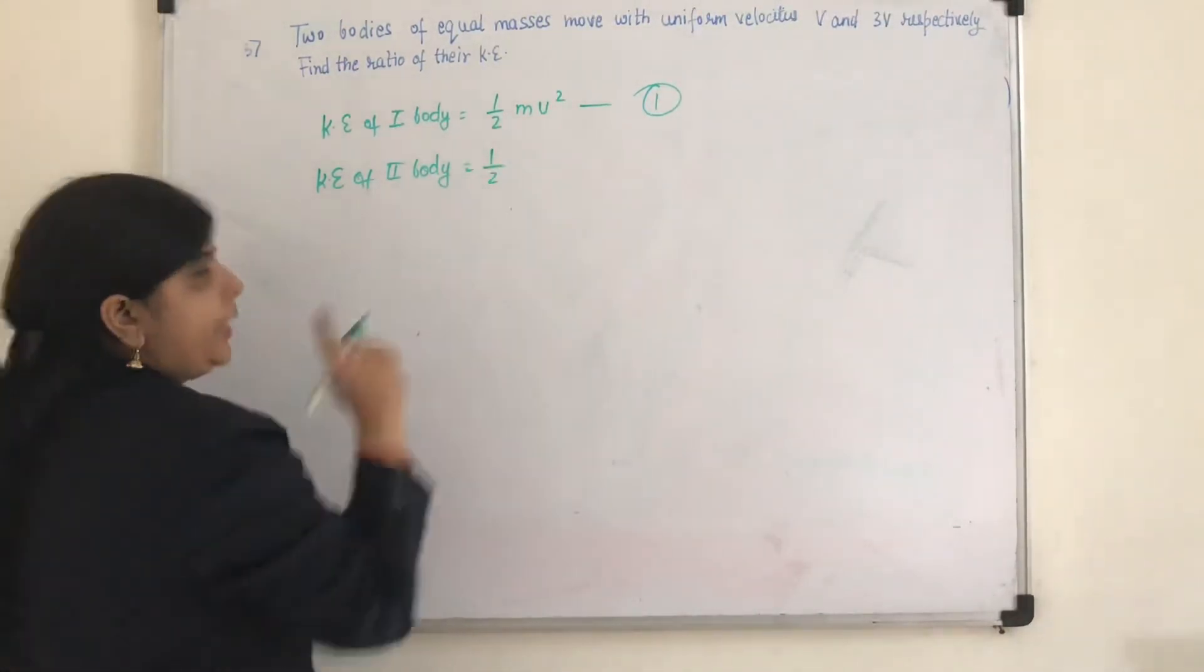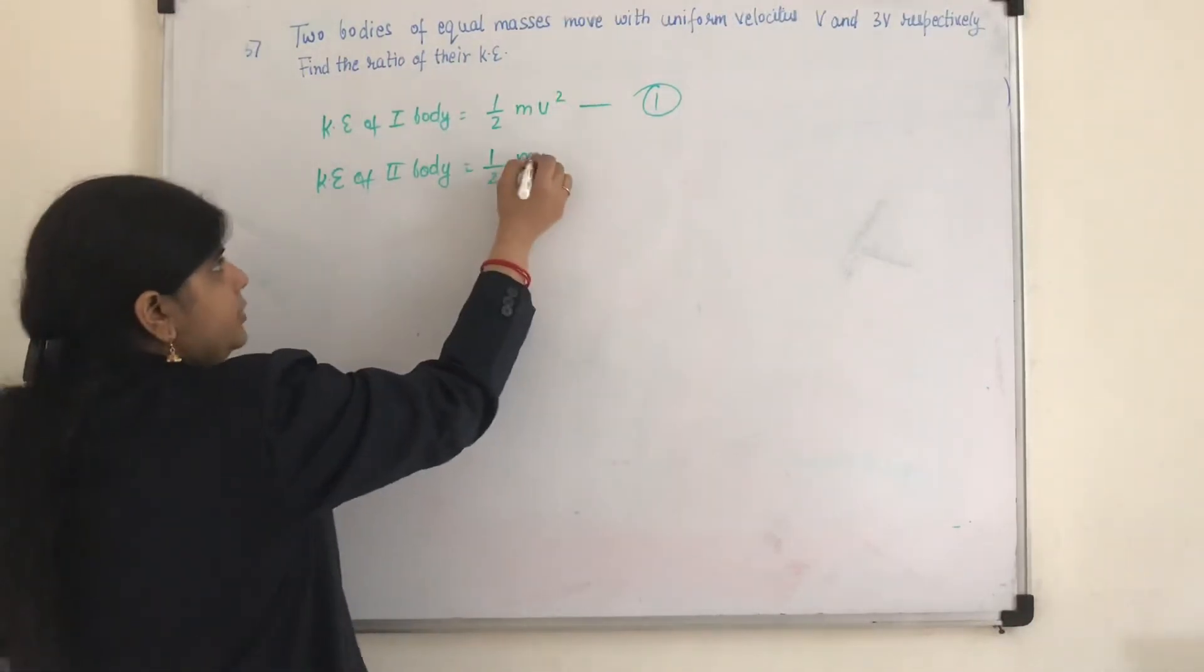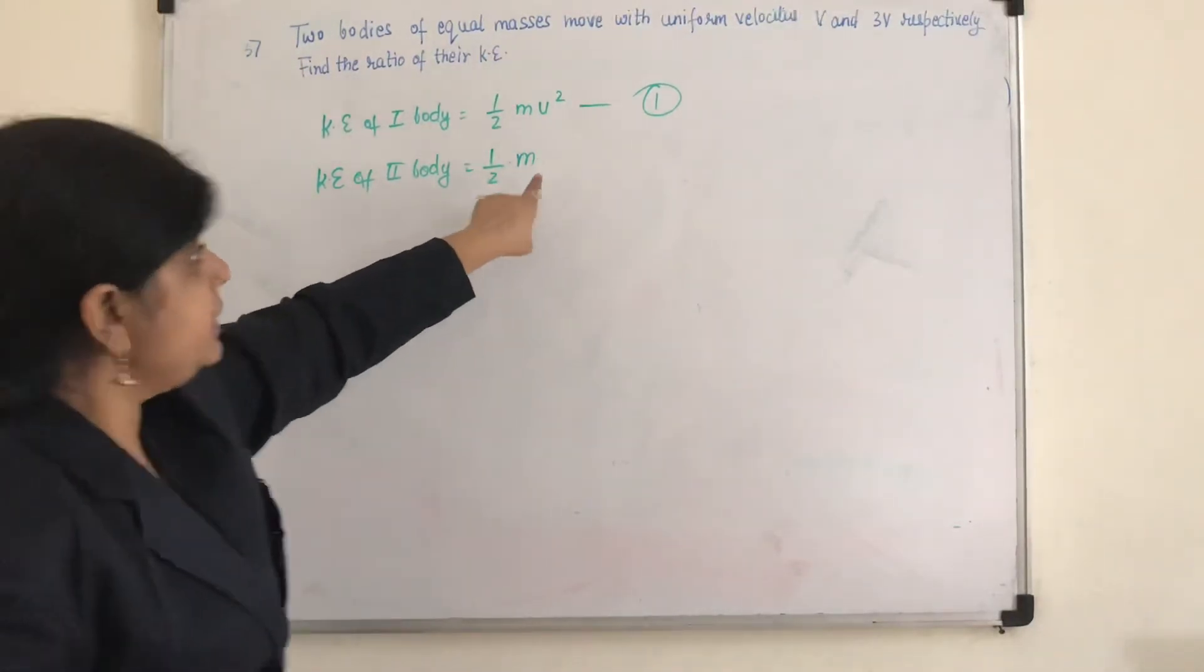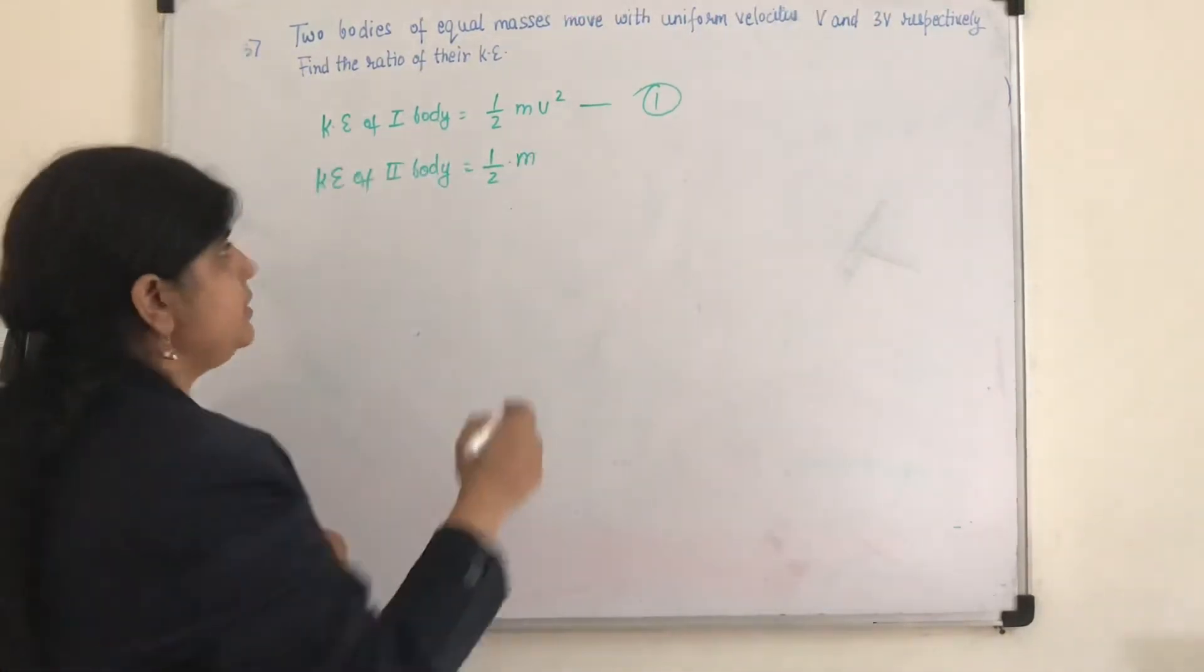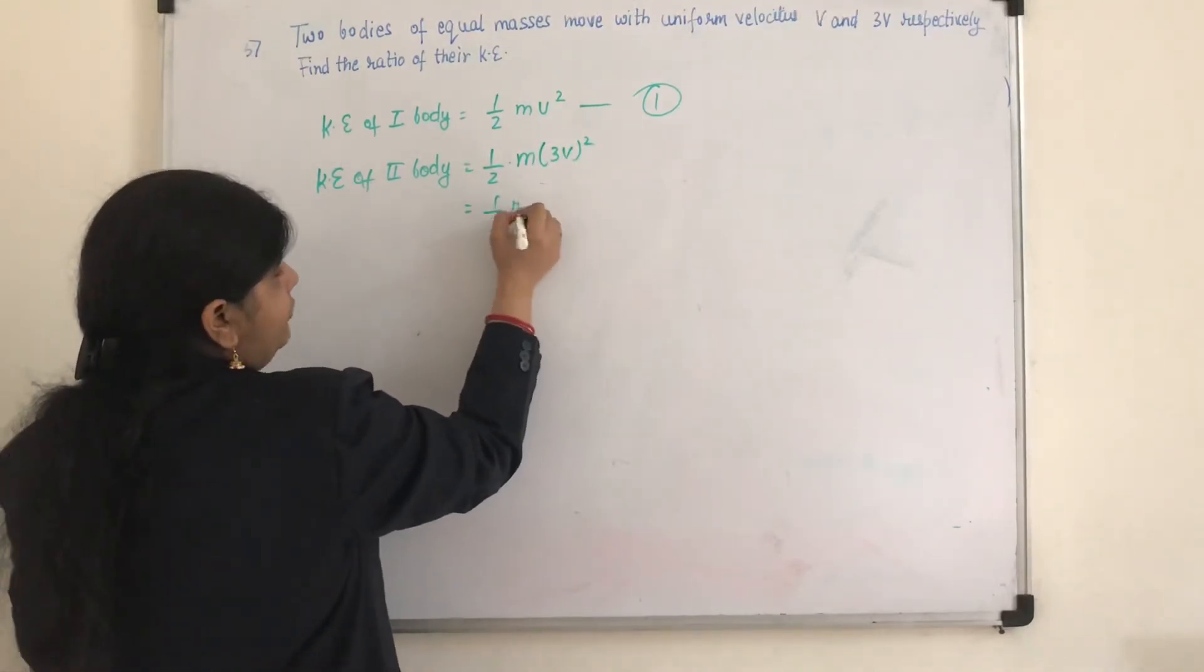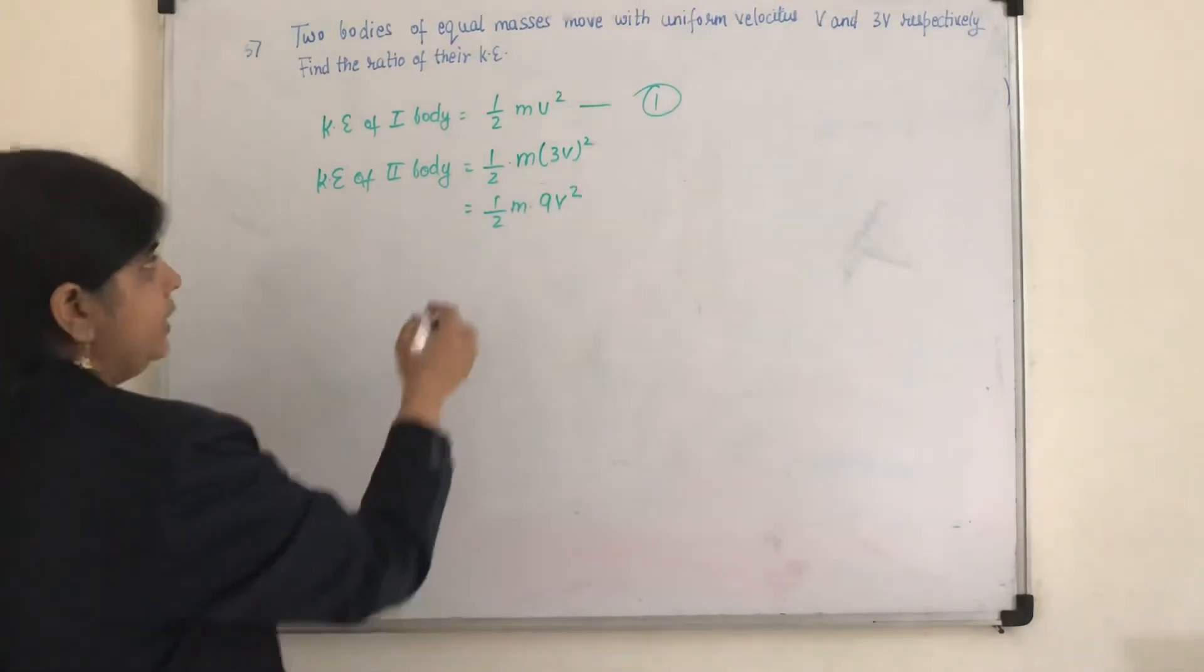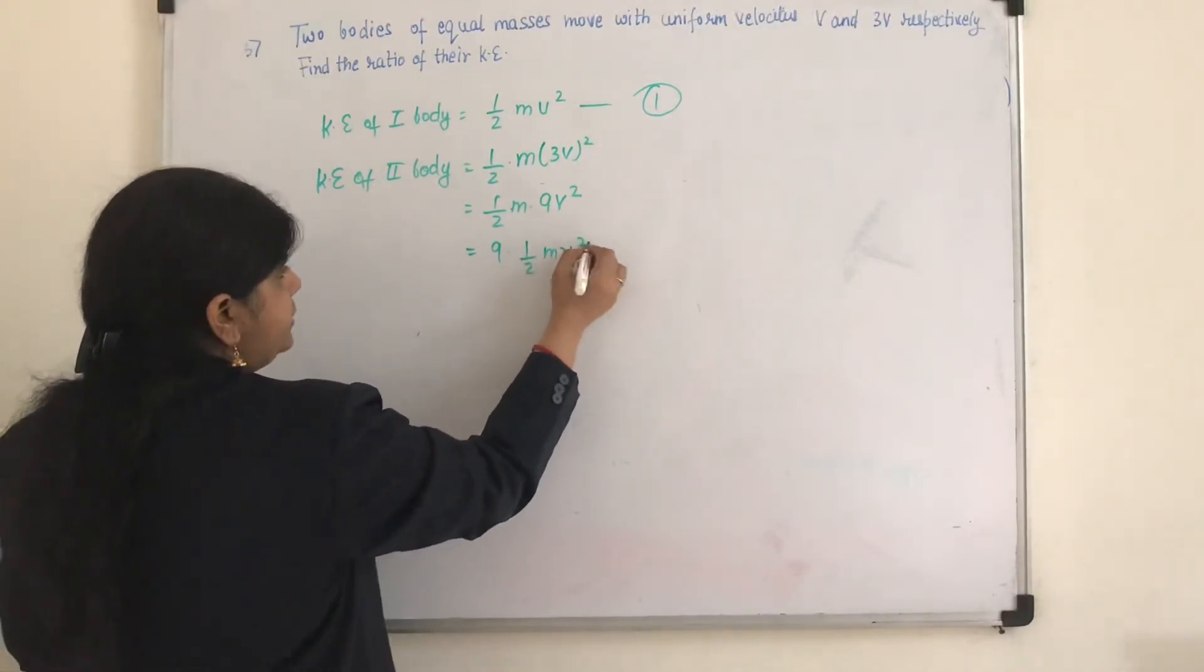So half, instead of m, because they are having the equal masses, so I will denote it by m only. Both of them are having the equal masses. So we have written it m only. Now v, so but instead of v square I have to write 3v square. Velocity is 3v for the second body. So this will be half m into 9v square, or we can write it as 9 times half mv square.